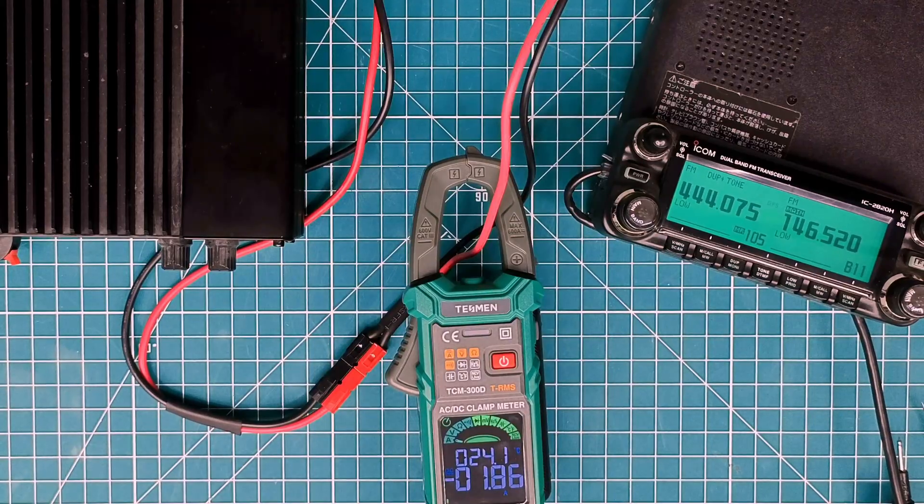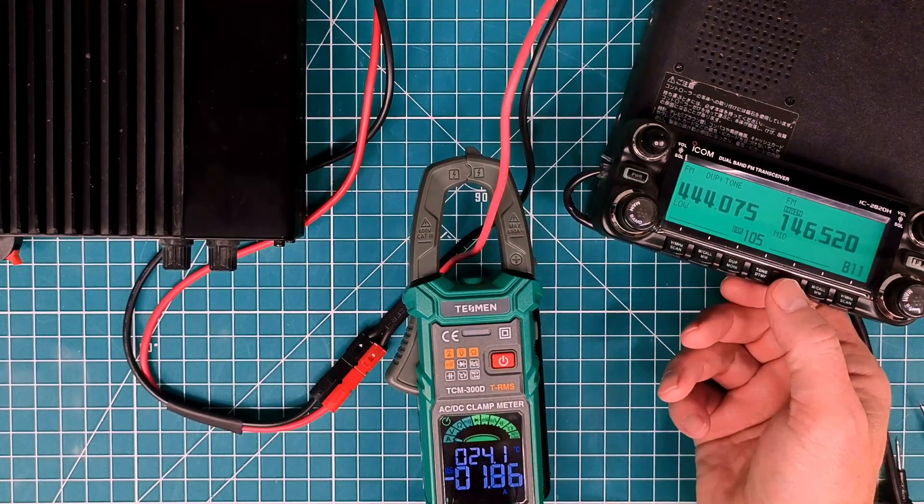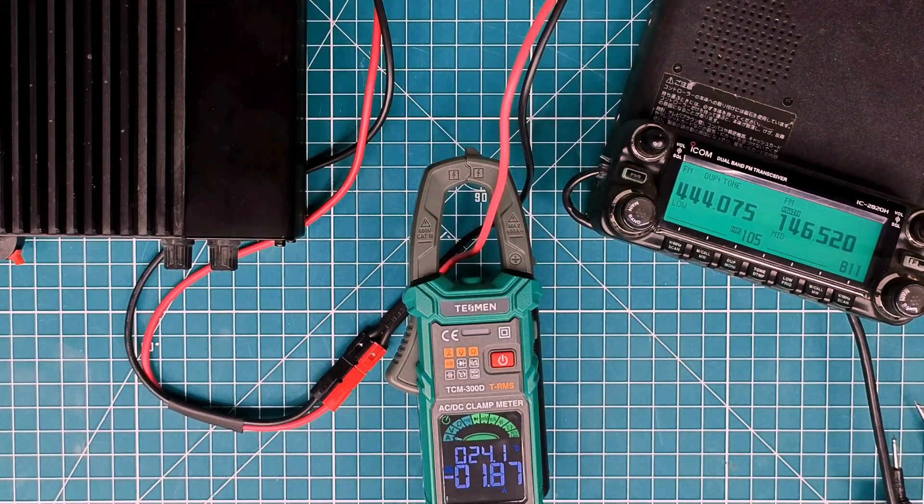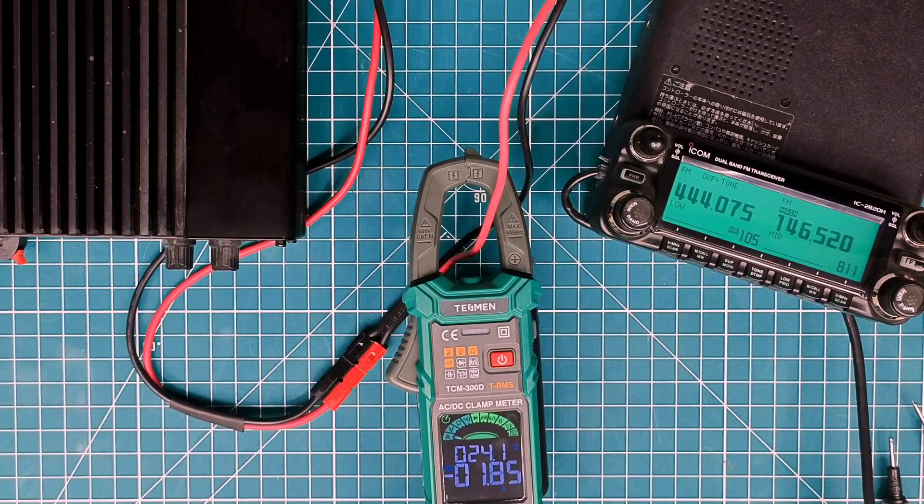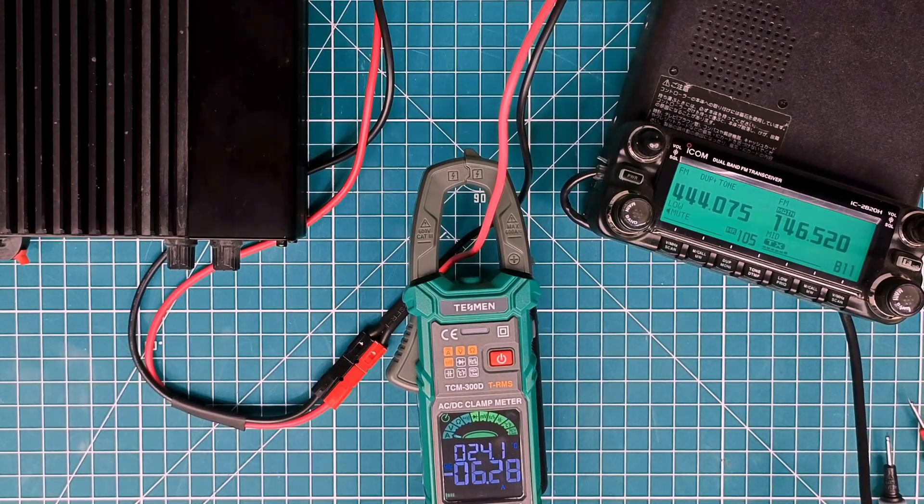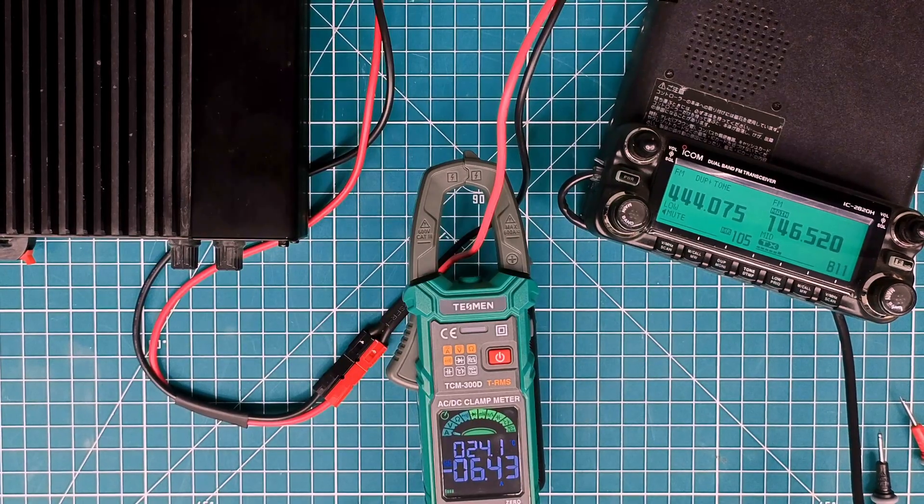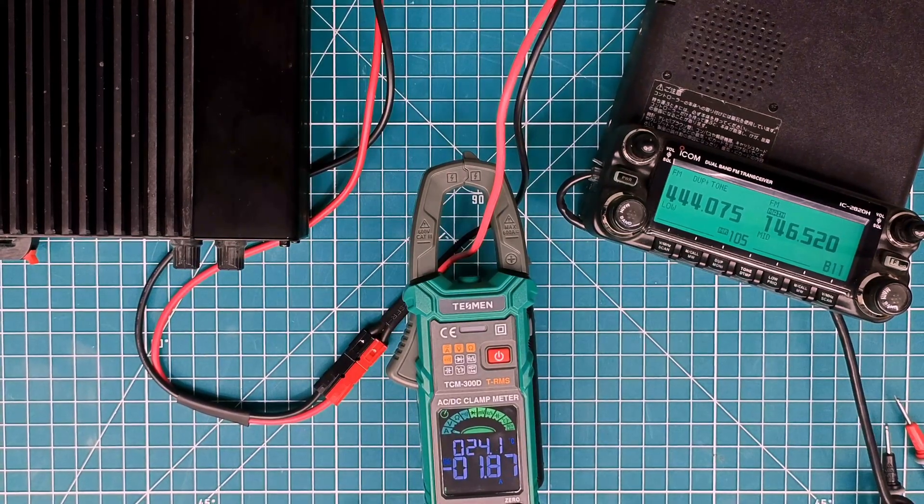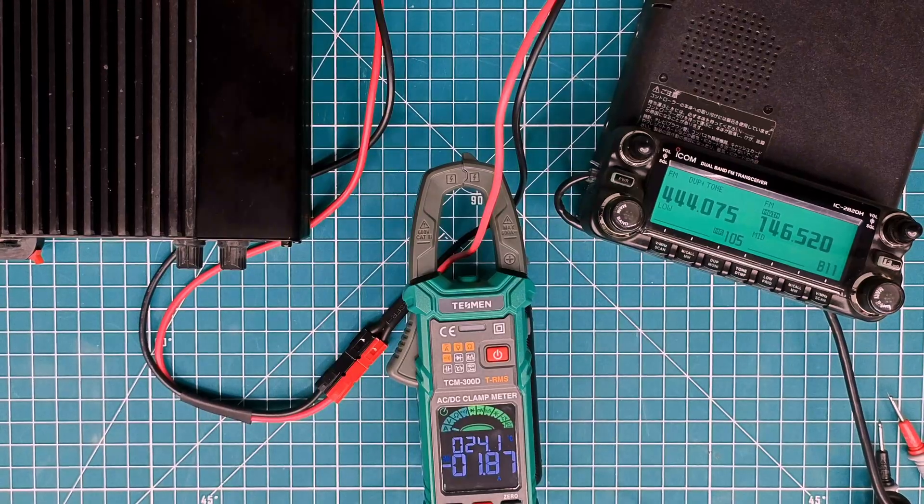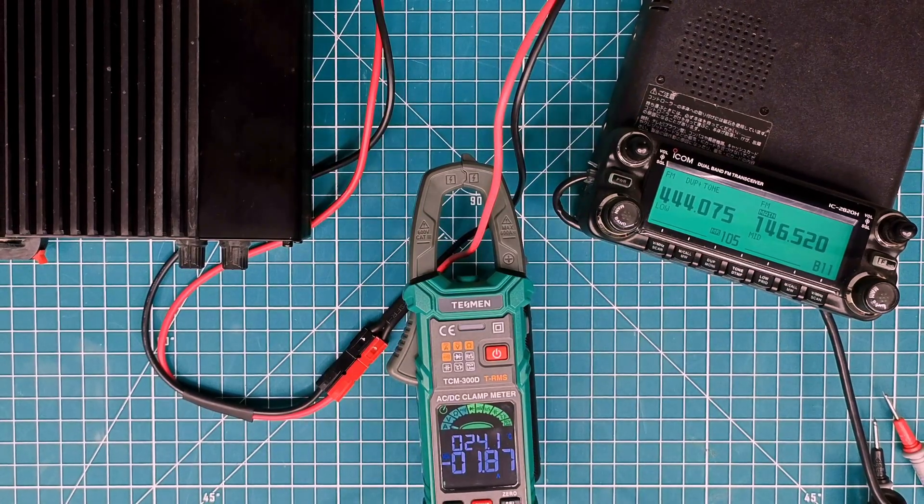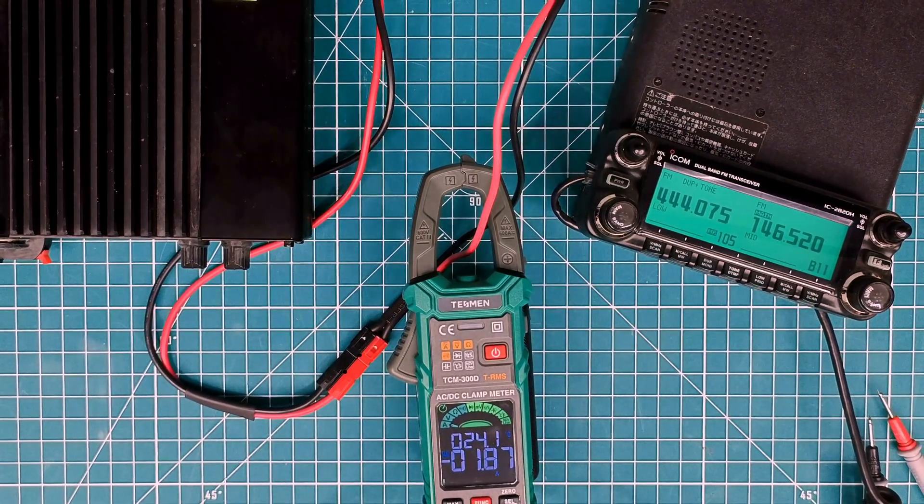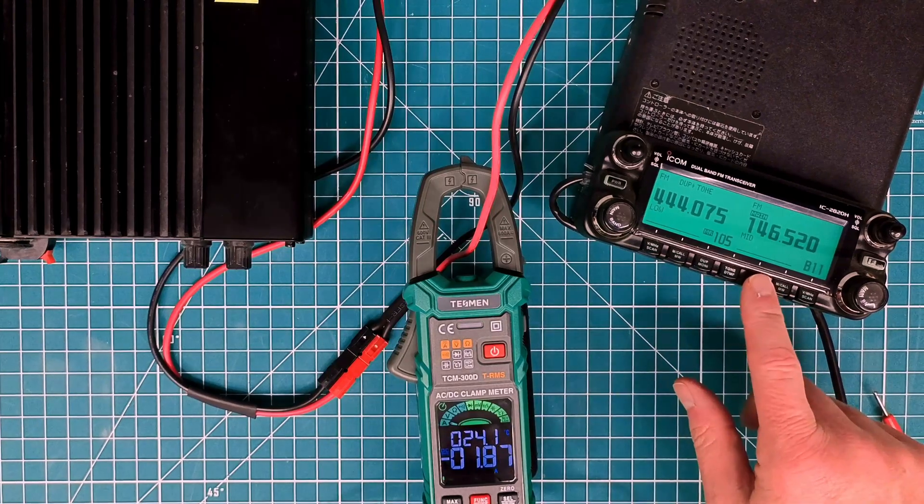So 4.6 amps from the power supply. So let's go ahead and move this up to mid. November whiskey nine Foxtrot testing one, two, three, three, two, one. All right. So over six amps of current draw in the mid power and we'll go ahead and move it up to high.